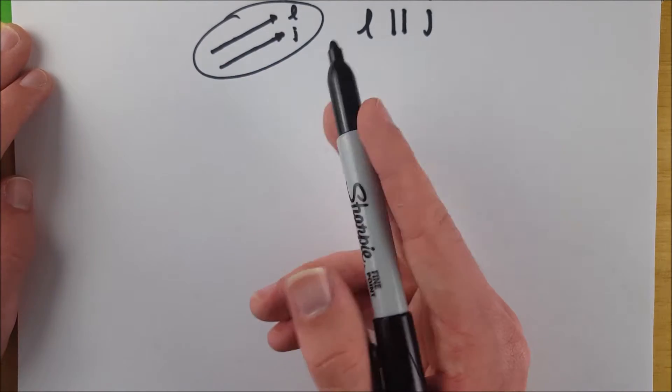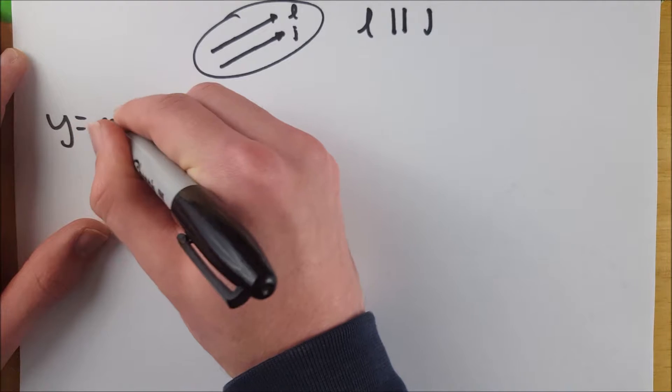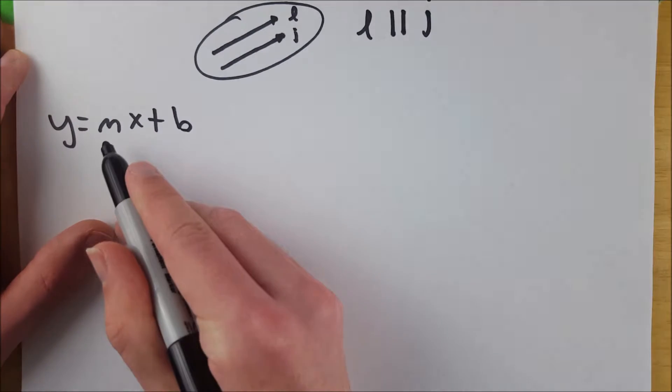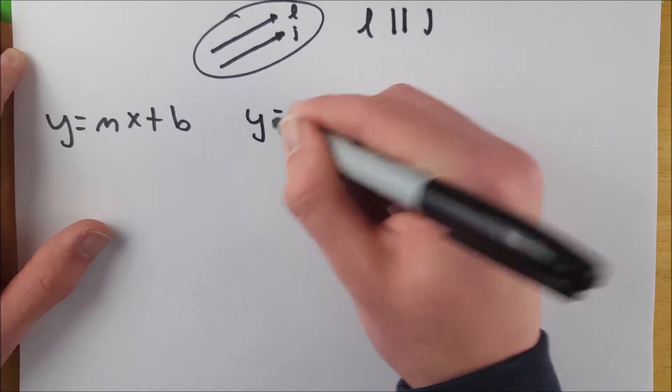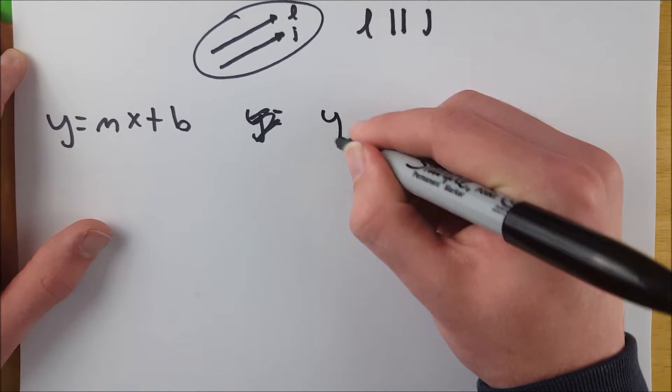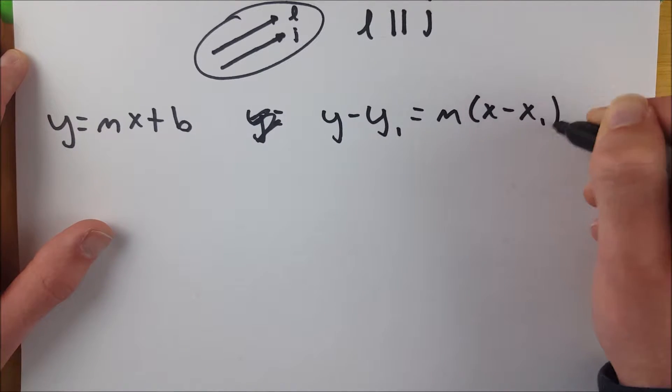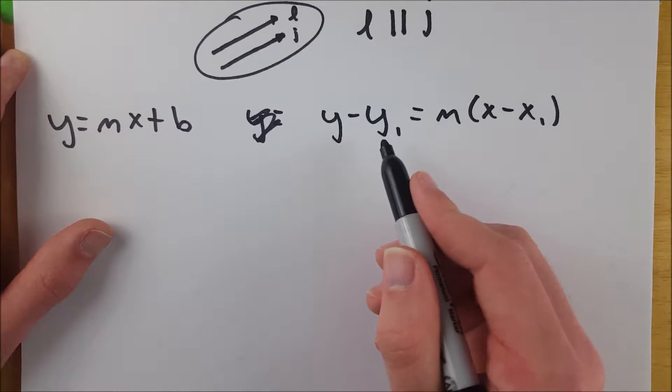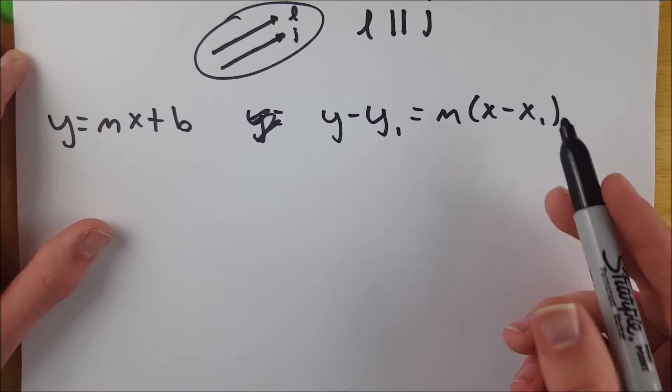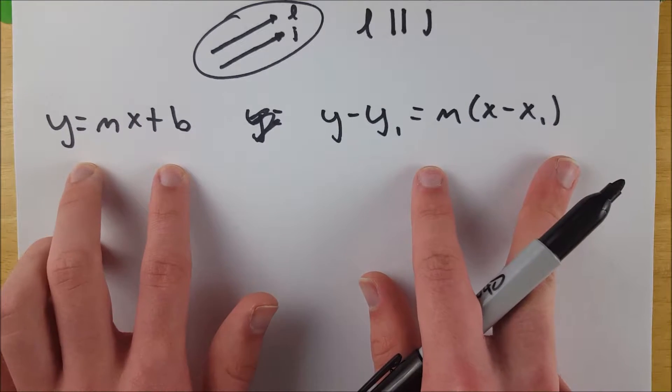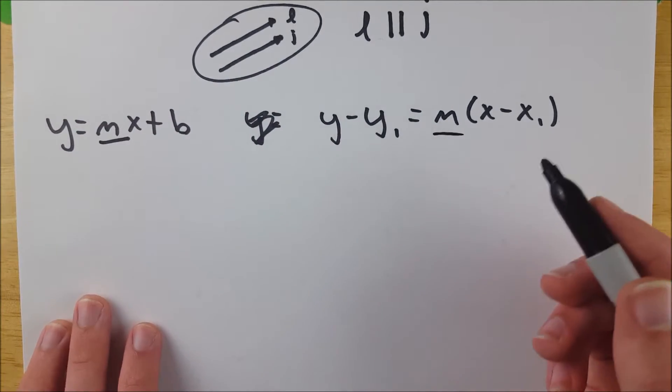So the first two easy ways to figure out if two lines have the same slope is if you have an equation for them in slope intercept form, which is y equals mx plus b, where the slope is m and the y intercept is b, or if you have the equation of the lines in point slope form, which is y minus y1 equals m times x minus x1. This is y minus the y coordinate of some point on the line equals the slope multiplied by x minus the x coordinate of a point on the line. So if you have the equations for the two lines you're looking at in either of these forms, then you can just pick out the slope right there. It's m in both equations.